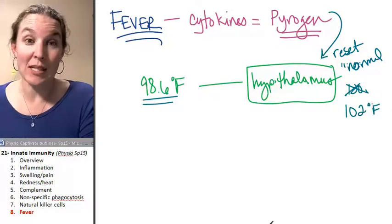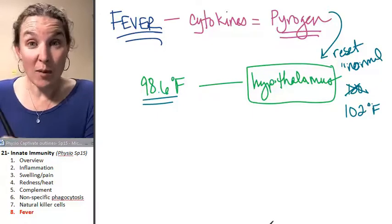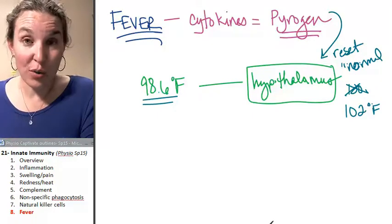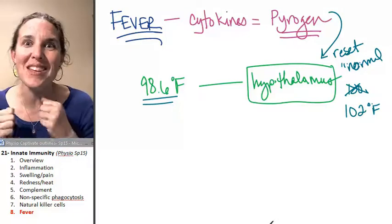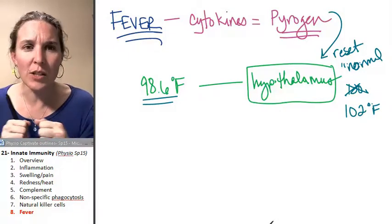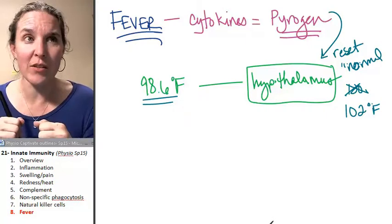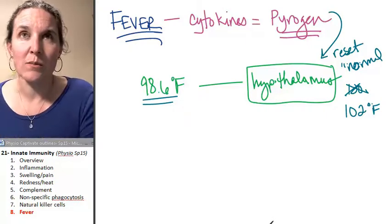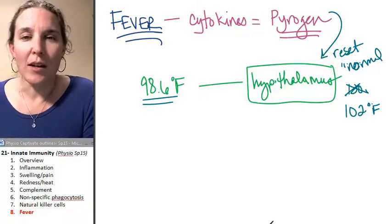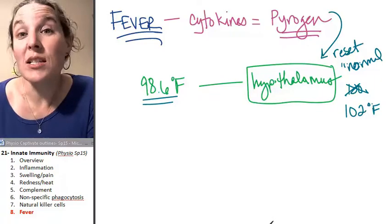So now the hypothalamus says if the body temperature is not 102, we're cold. That's why you get the shivery shakes. What is that called when you get the shivery shakes when you have a fever? I can't remember. It has a name, but you can call it the shivery shakes if you want.